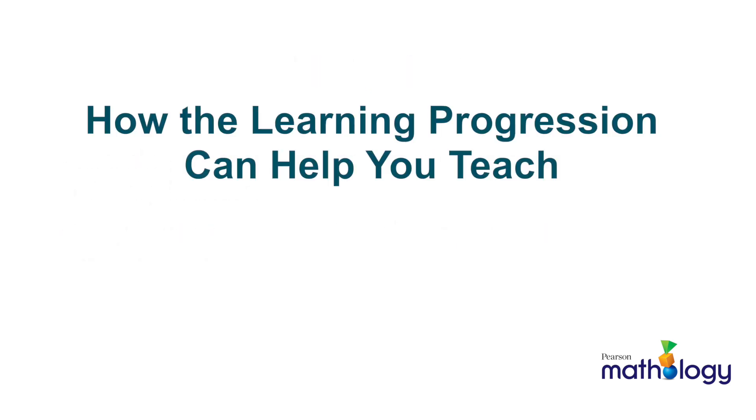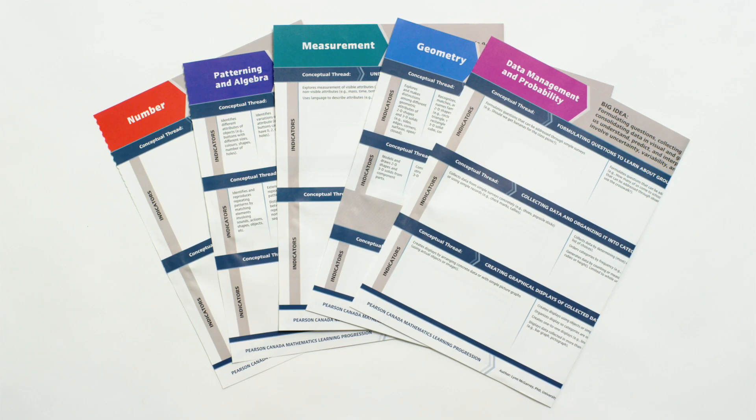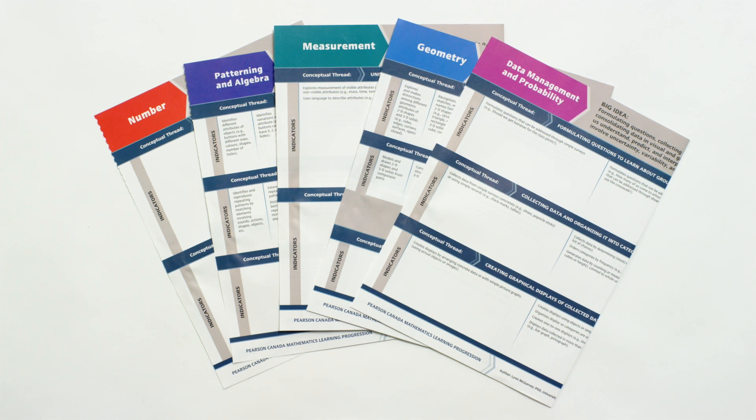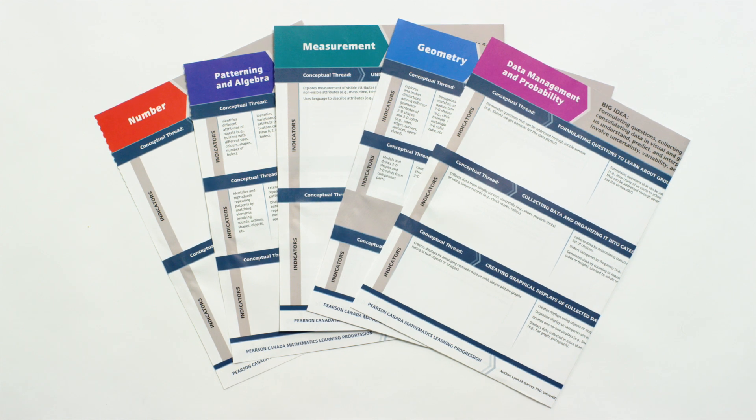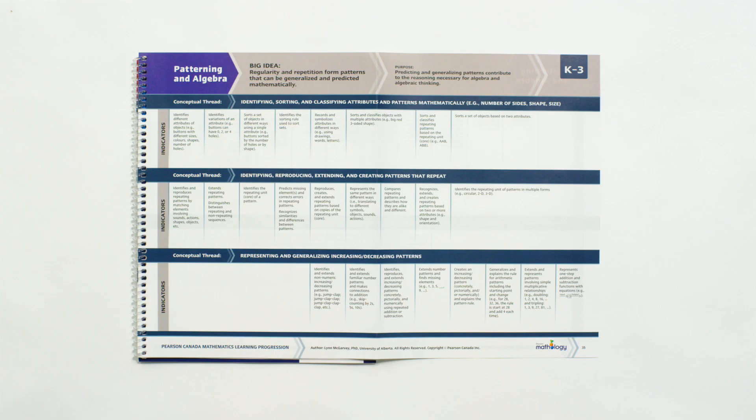How you'll use the learning progression is really your choice. Here are some ways you might find helpful. One, the learning progression gives you an overview of the mathematics learning at the primary level. You can track growth and development over time in terms of both your students' learning and the mathematical concepts they are expected to meet in the early years. The shared language of curriculum and the learning progression can help you identify a related outcome or expectation in any indicator.